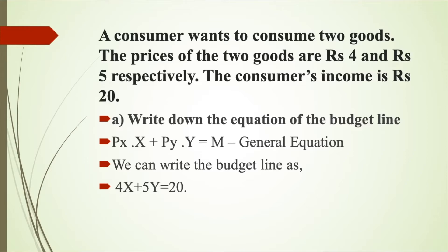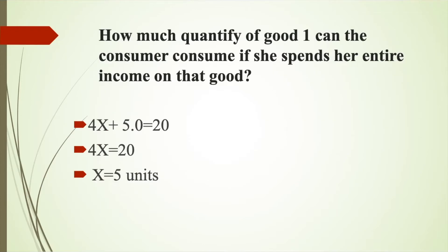Now let's look at Part B: how much quantity of good 1 can the consumer consume if she spends her entire income on that good? Since our budget line is 4x + 5y = 20, spending the entire income on good 1 means y = 0. So 4x + 5(0) = 20, giving 4x = 20, and x = 20/4 = 5 units. This means the consumer will consume 5 units of good 1.